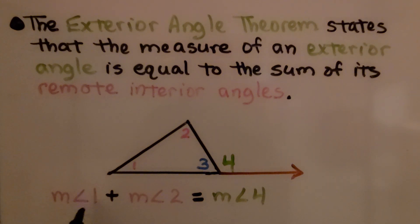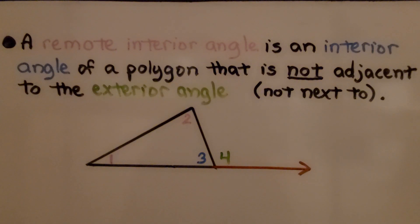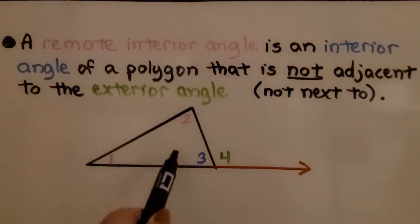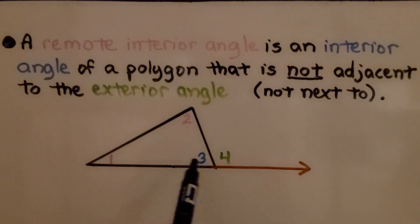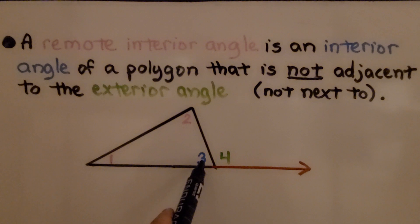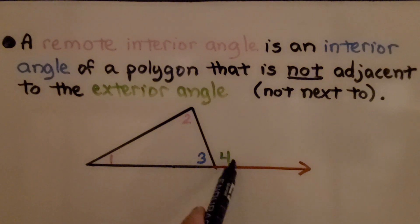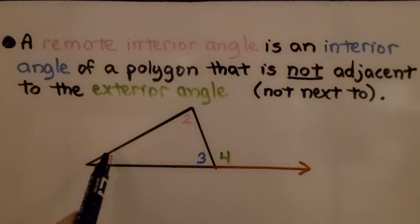The measure of angle 1 plus the measure of angle 2 is equal to the measure of angle 4. A remote interior angle is an interior angle of a polygon — it's inside the triangle and not adjacent to the exterior angle. So angle 3 is not a remote interior angle because it's next to the exterior angle. Angle 1 and angle 2 are the remote interior angles.